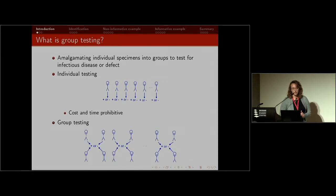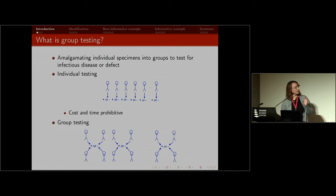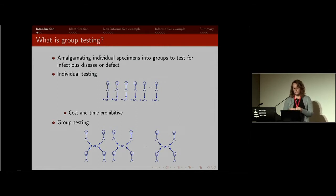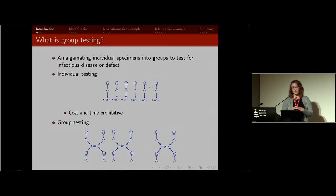So instead, if we utilize group testing, if you imagine combining four individual specimens into a single specimen — say a blood specimen — you would test all four at once and get one response, positive or negative. And if that group tests negative, you've just saved three tests.